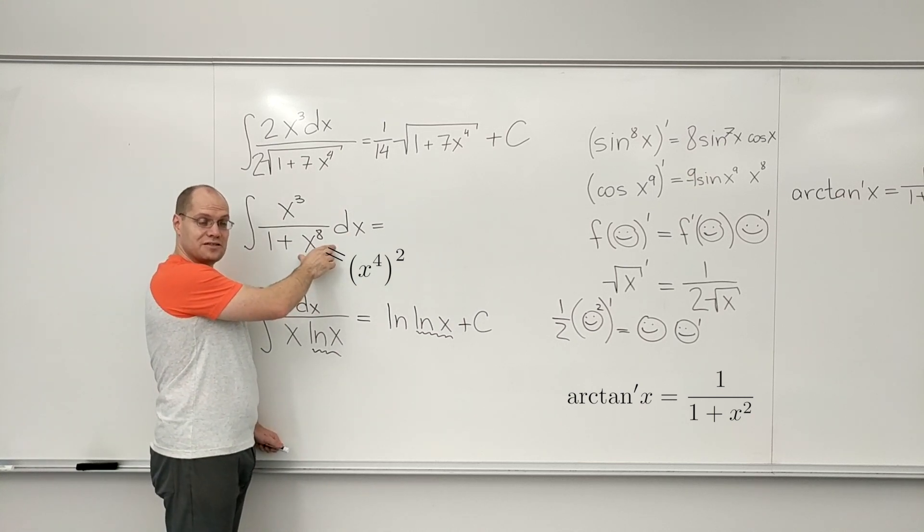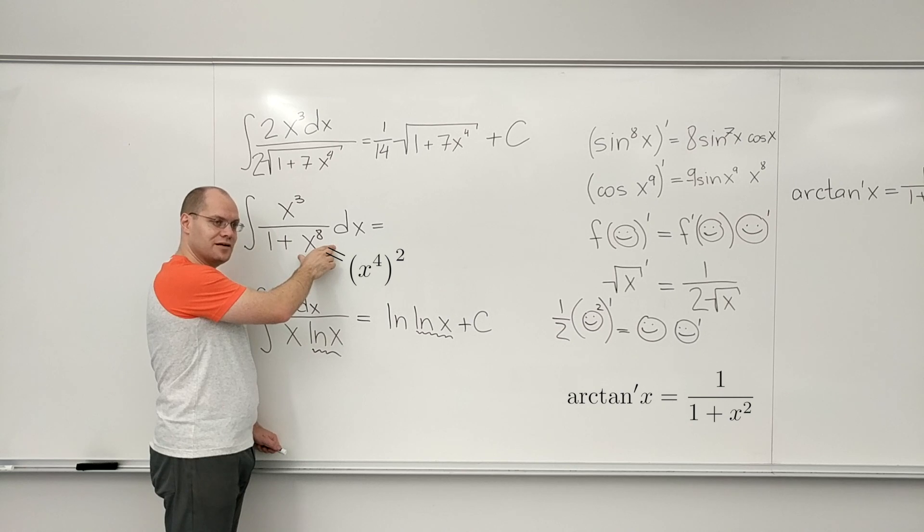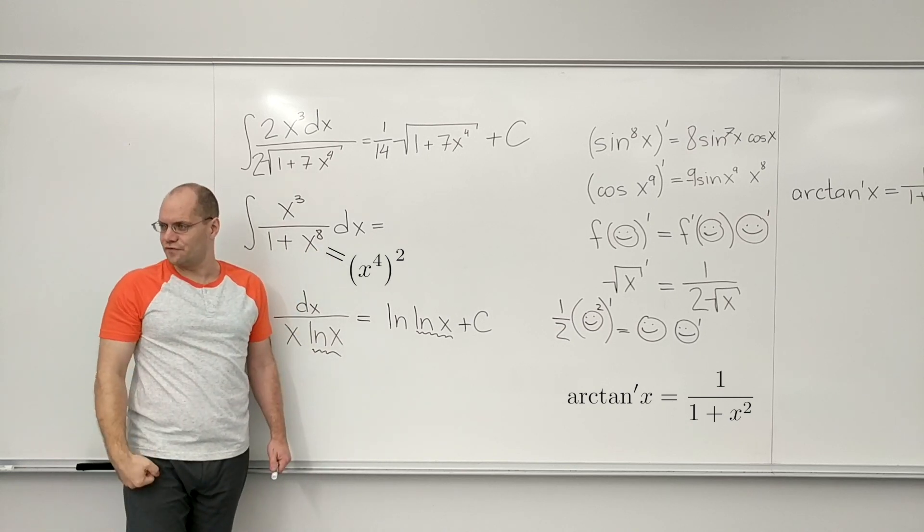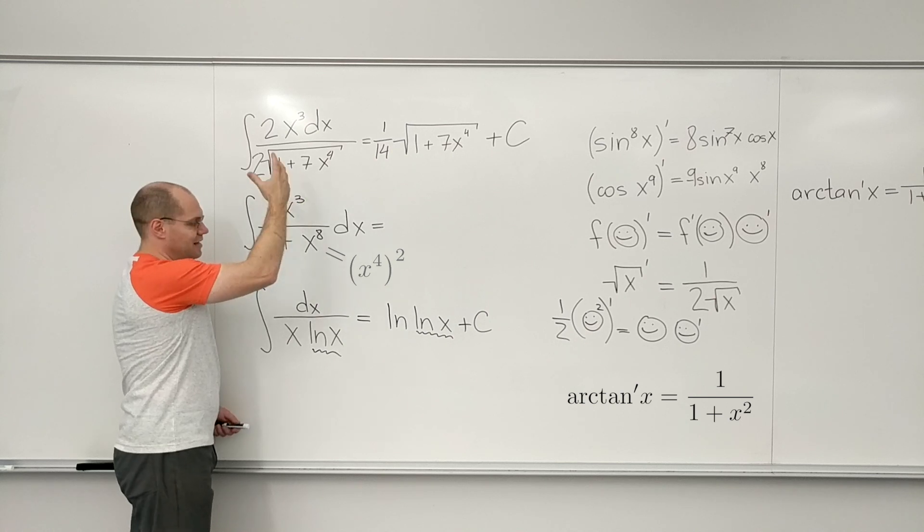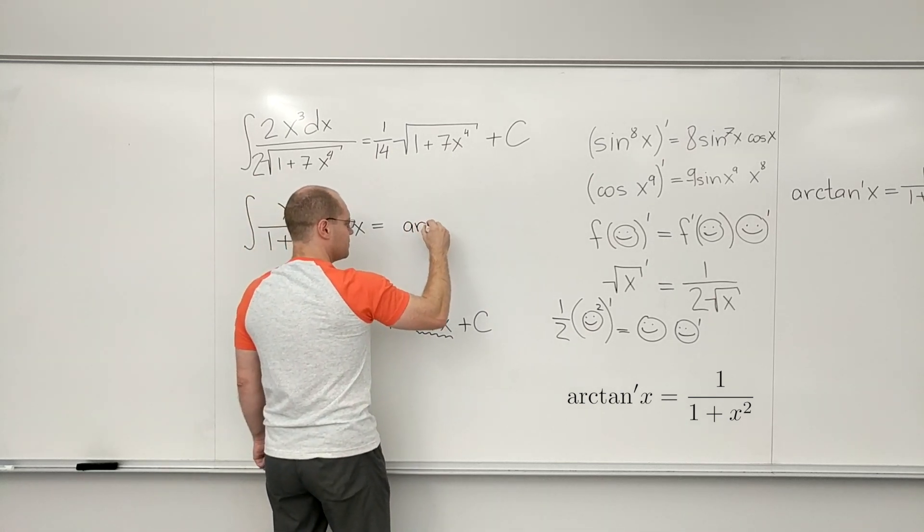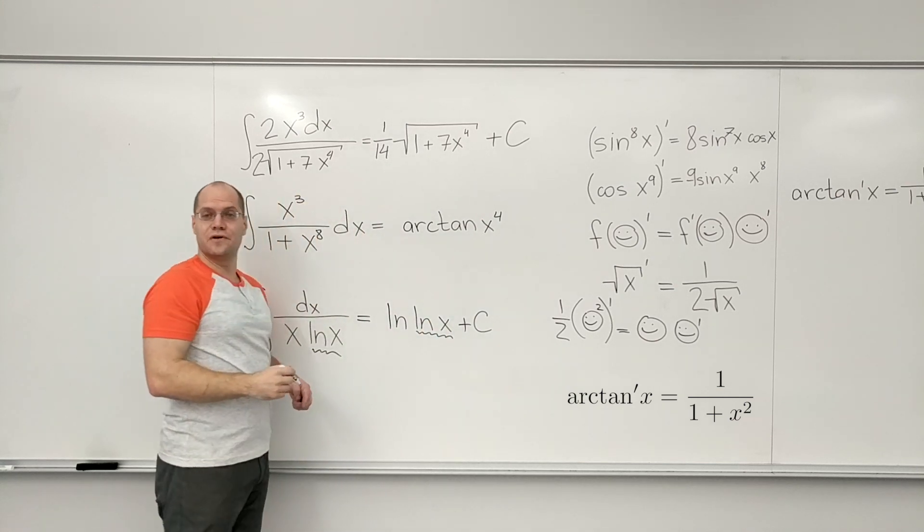So then I think to myself, well, if this is x to the fourth squared, do I have the derivative of x to the fourth? Well, yes, I do. And there it is. So it's arctan of x to the fourth.